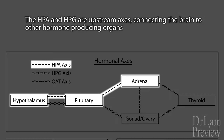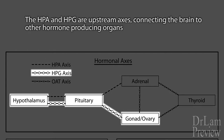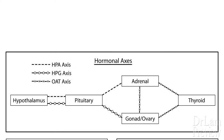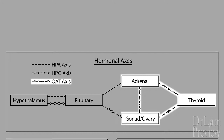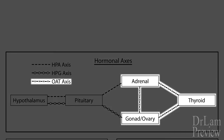There's also the HPG, or the hypothalamic pituitary gonadal hormonal axis, which governs the female's ovarian and menstrual cycle. One axis that is seldom looked at is the OAT axis. The HPA as well as the HPG axis are what we call upstream axes in the sense that they connect the brain — the hypothalamus — to the endocrine organ.